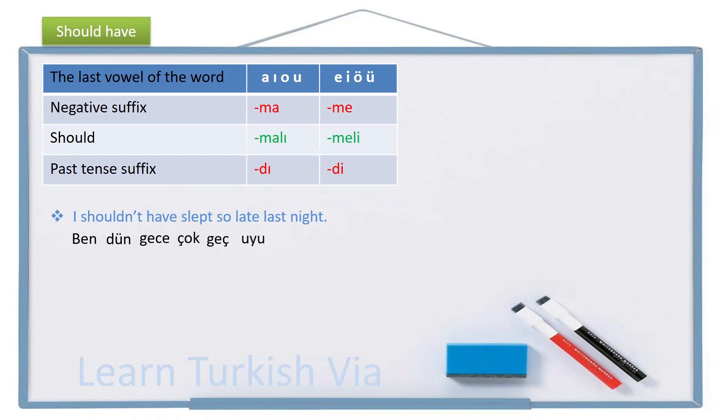Sleep, uyu, this time not sleep, uyuma, should not sleep. Uyumamalı, shouldn't have slept, with the past tense, again, -di, with the buffer letter. Uyumamalıydı, I shouldn't have slept, uyumamalıydım. I shouldn't have slept so late last night. Ben dün gece, çok geç uyumamalıydım.